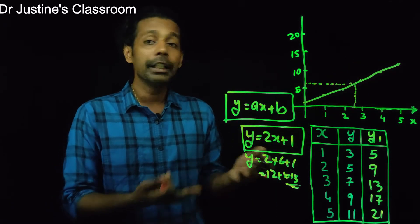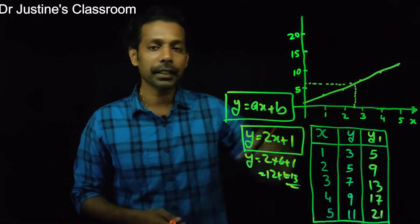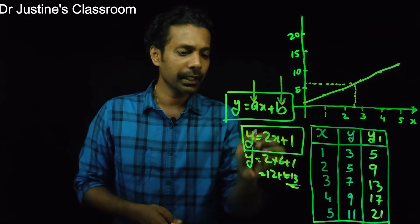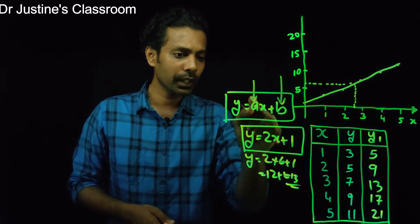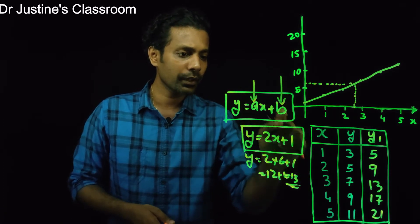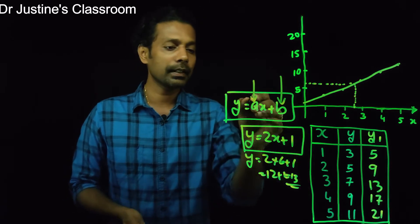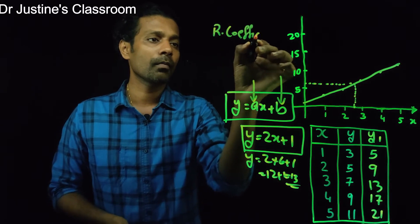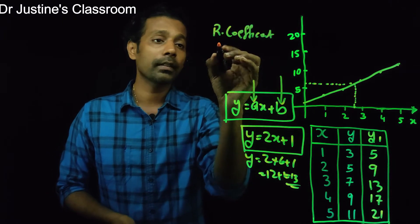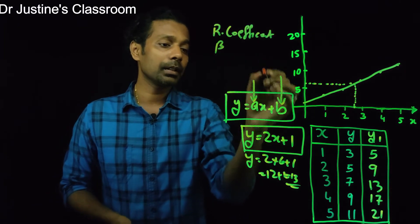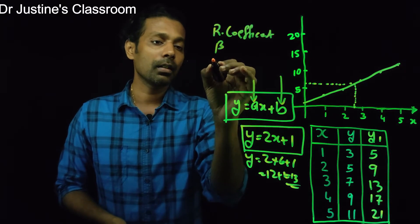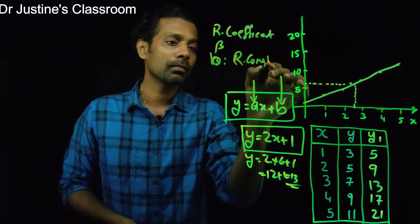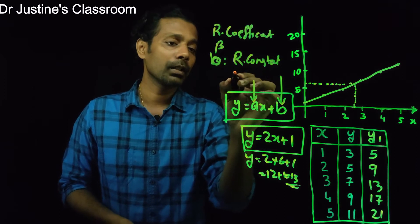What I am focusing on here is linear regression — establishing a straight line pattern. The equation Y = AX + B has two components: A and B. In our example Y = 2X + 1, A is 2 and B is 1. A is called the regression coefficient, also known as beta, and B is called the regression constant, also known as the origin.